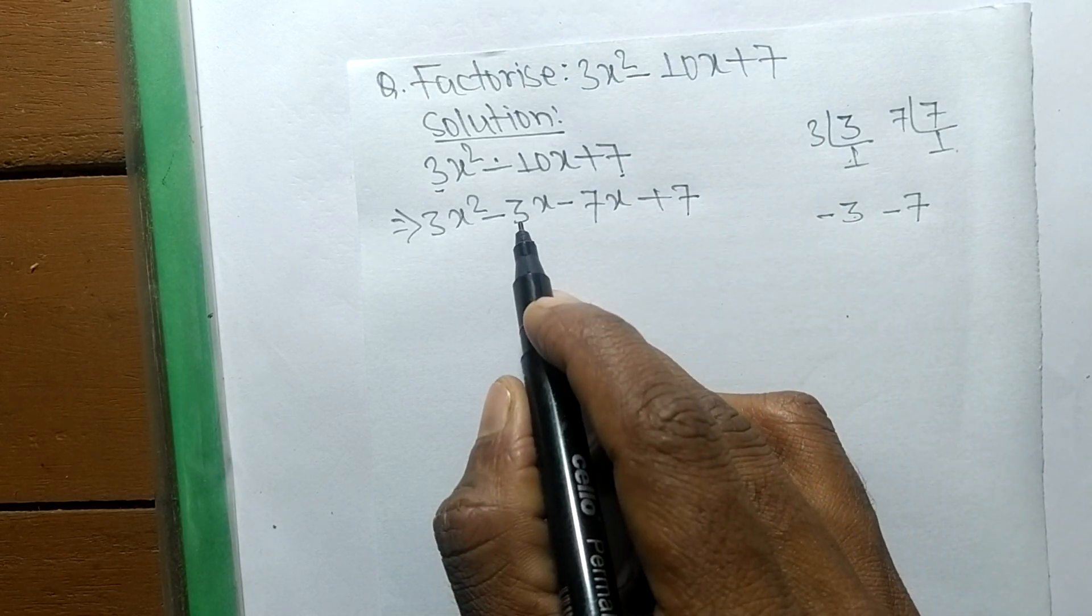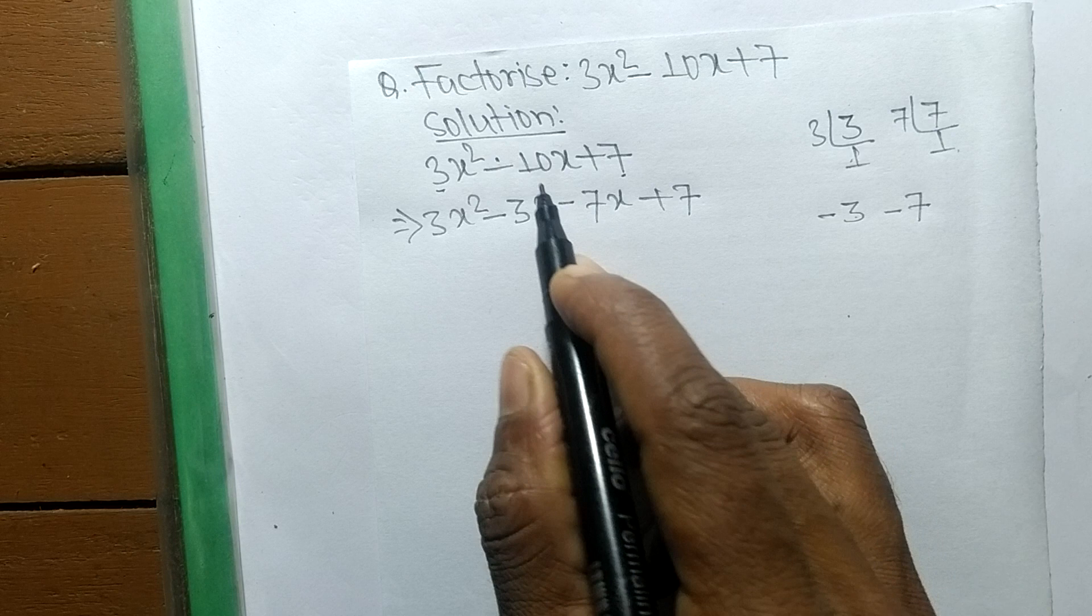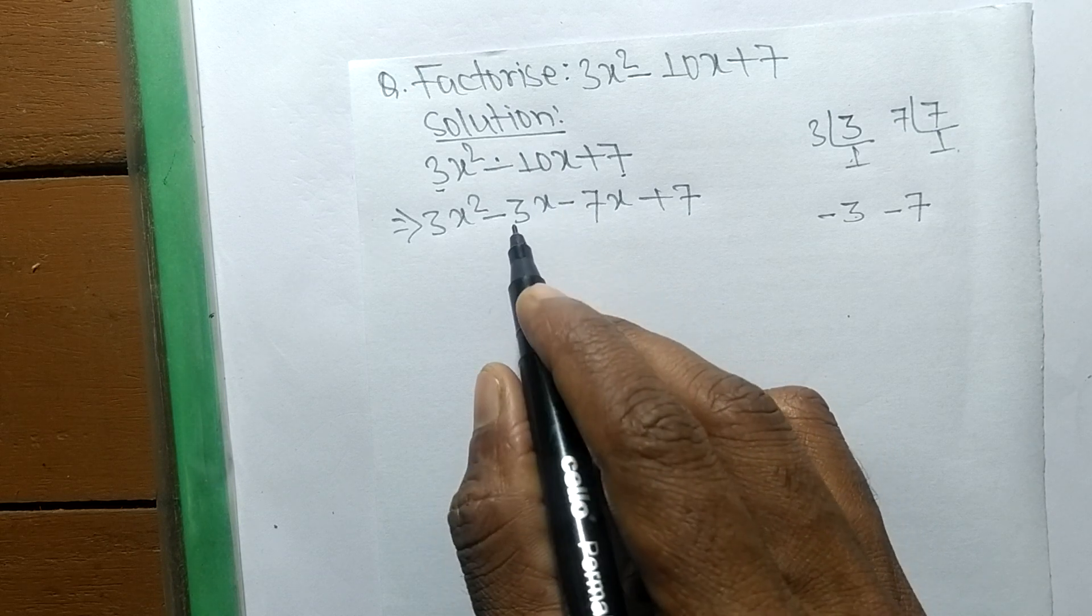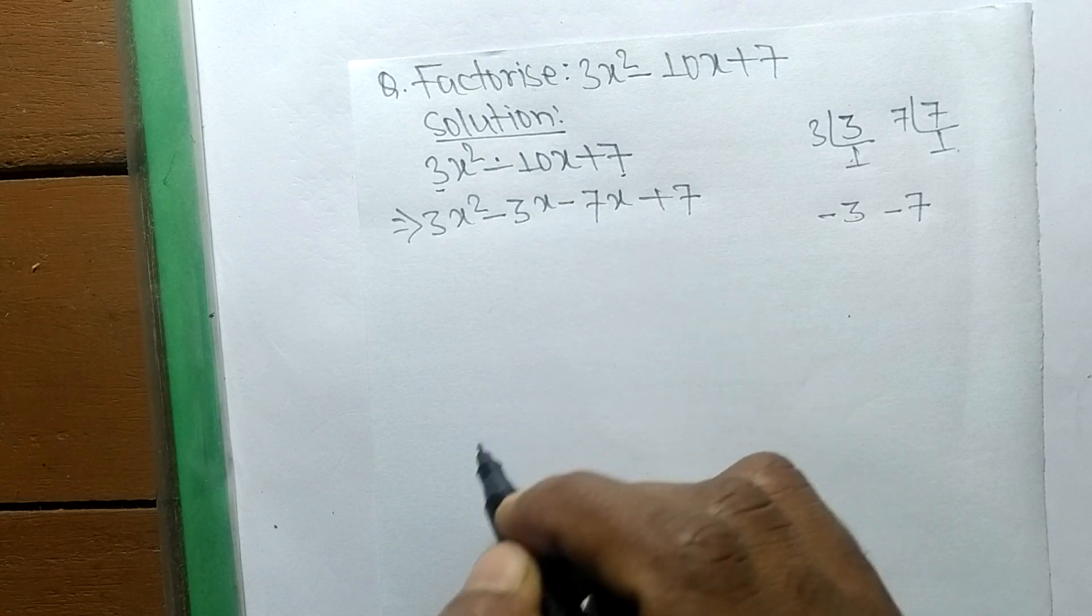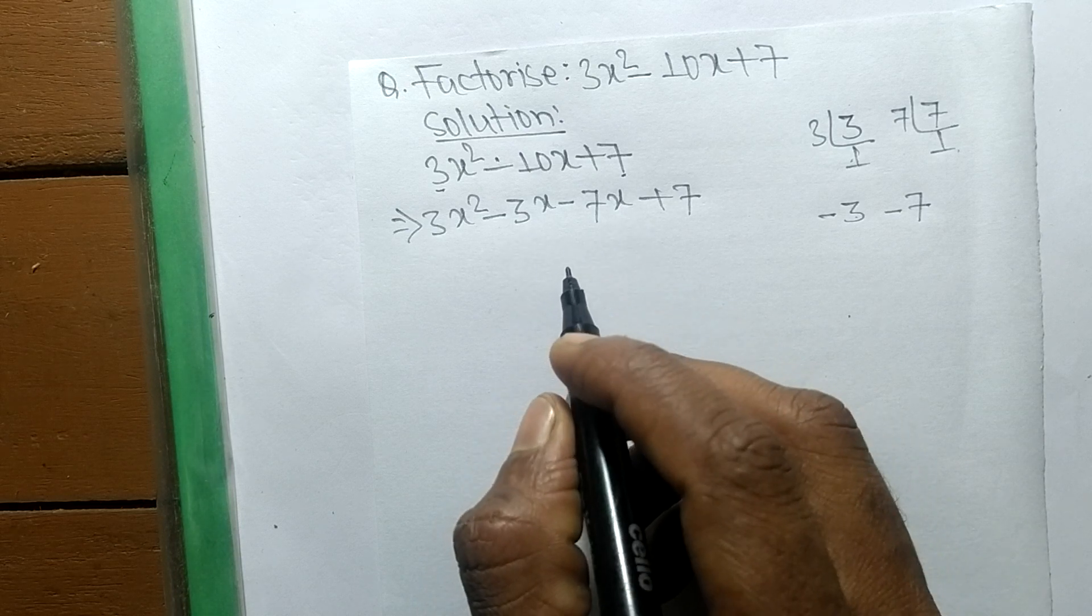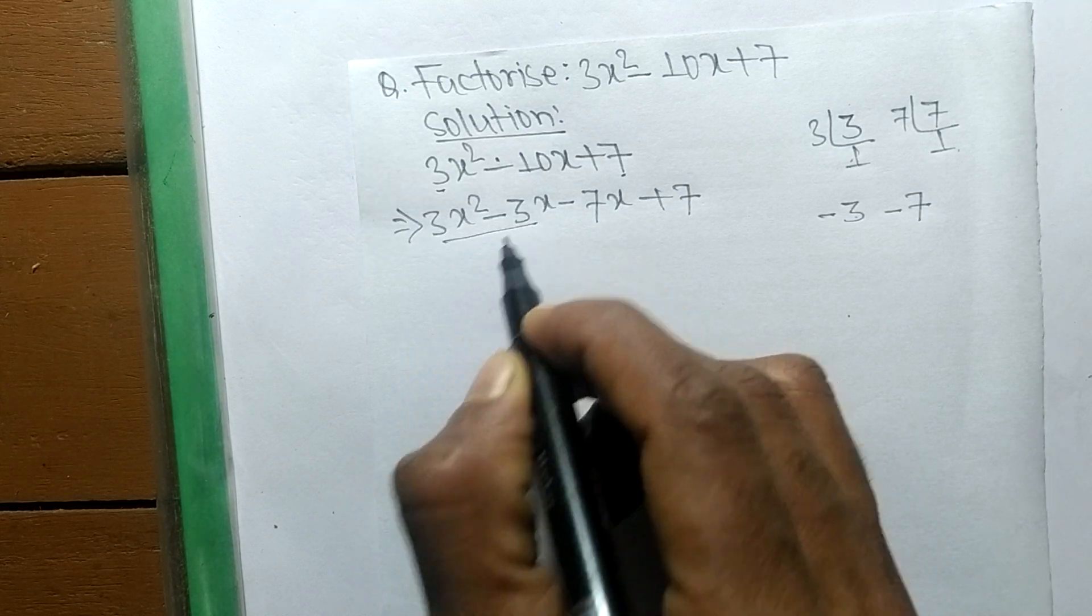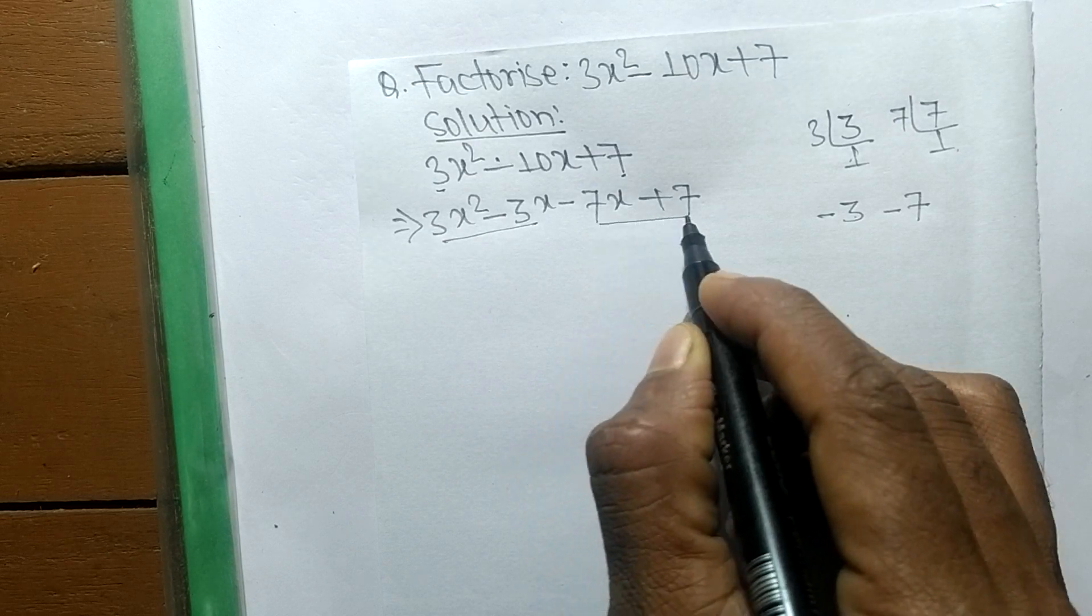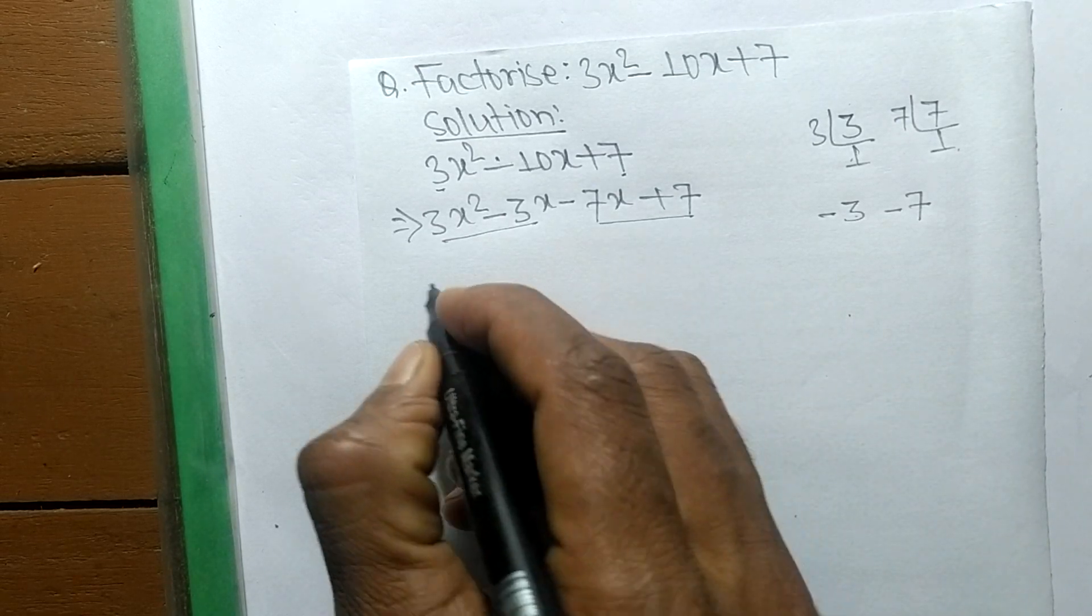Since -3x - 7x equals -10x, now we have to divide it into two pairs. These are the first pair, and these are the second pair.